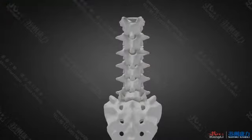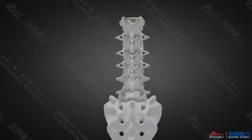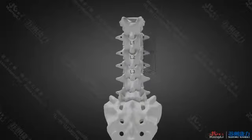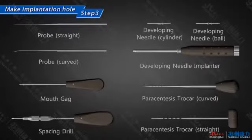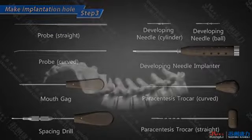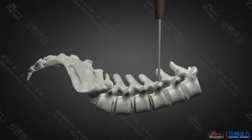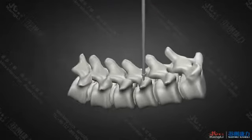Step 2: determine the point and angle of the screw. The point for implementing L1 to L3 pedicle screws is the intersection of the transverse process middle horizontal line and the outer vertical line of the superior articular process. The screw should be at a 5 to 10 degree medial angle with the sagittal plane and parallel to the horizontal plane, perpendicular to the gravity line of the spine.